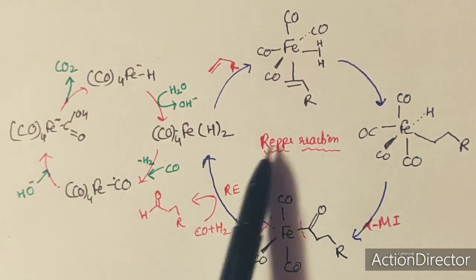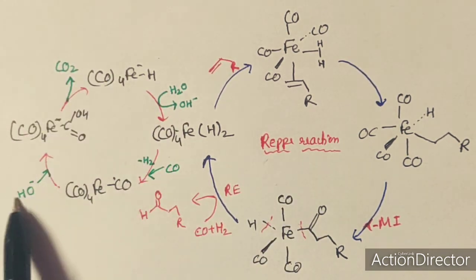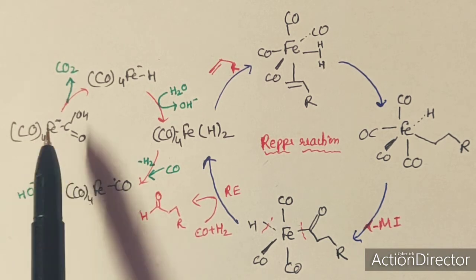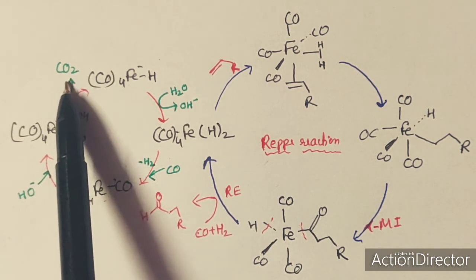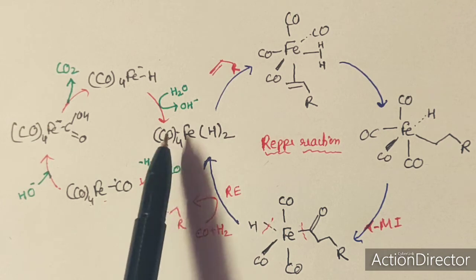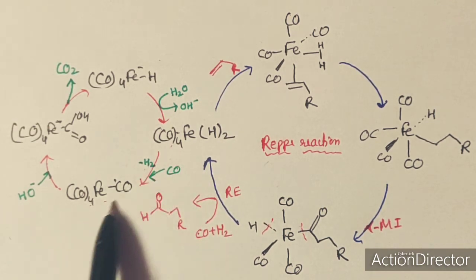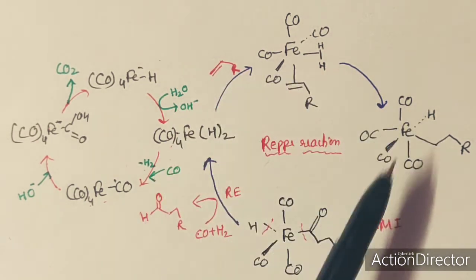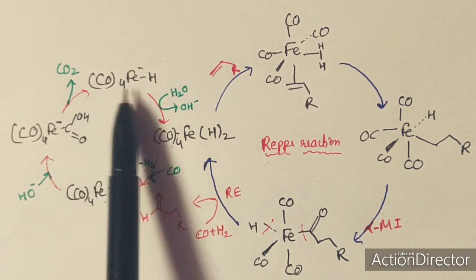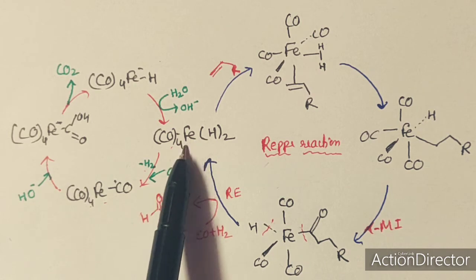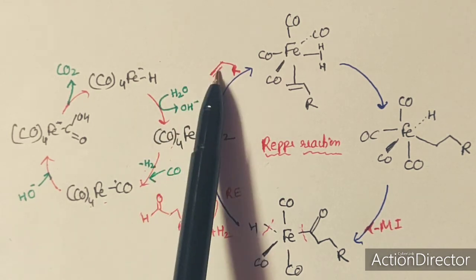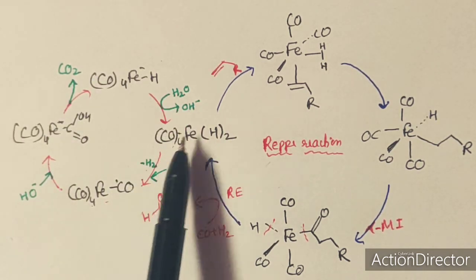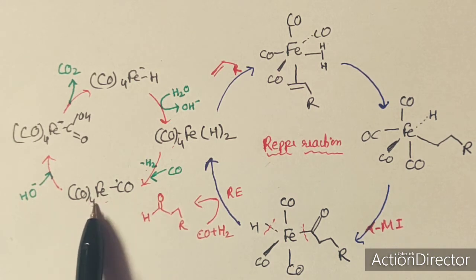In the RAP reaction cycle, the water gas shift cycle is embedded. Fe(CO)5 in the presence of base converts into metacarboxylic acid. After evolution of CO2 it converts into a dihydride complex, and after removal of H2 and addition of CO it regenerates Fe(CO)5. This dihydride complex generated from water gas shift through Fe(CO)5 can then easily add an olefin.